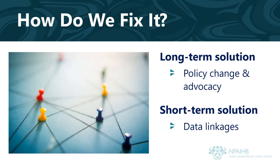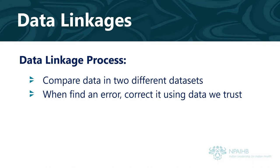The ideal way to fix racial misclassification is through policy change and advocacy. In the short term, though, we can correct misclassified data using data linkages. Essentially, data linkages involve comparing data in two different data sets. When we find an error, we correct for it using the data we trust.